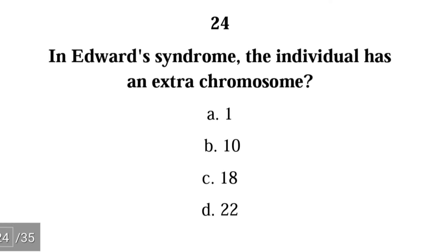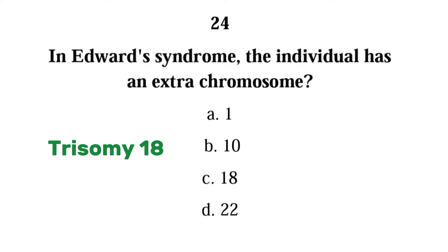Number twenty-four: in Edwards syndrome, the individual has an extra chromosome — one, ten, eighteen, or twenty-two? The correct answer is C — Edwards syndrome is also known as trisomy 18, and this happens when an individual has three chromosome 18 instead of the normal two.